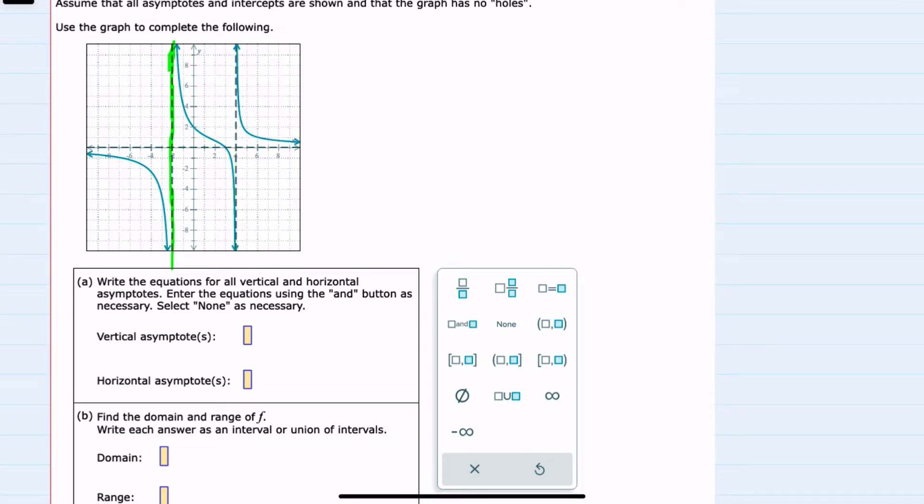The first one here goes through the value x equals negative 2. So the equation of that asymptote will be x equals negative 2. That's a vertical line.